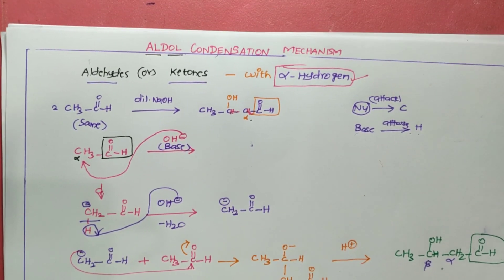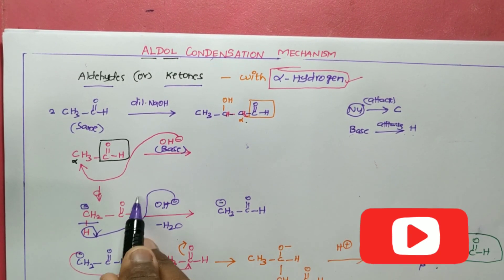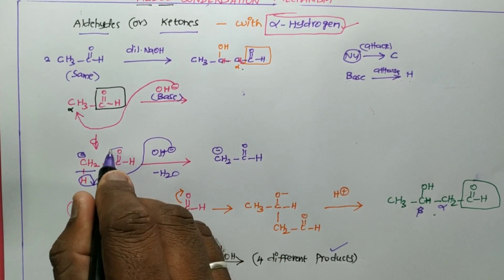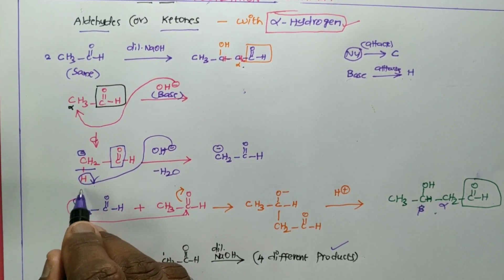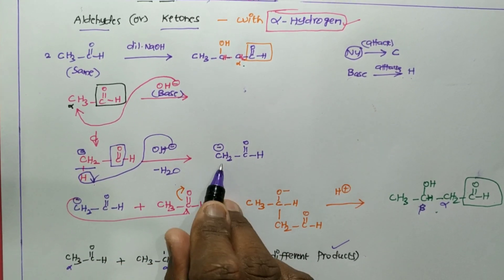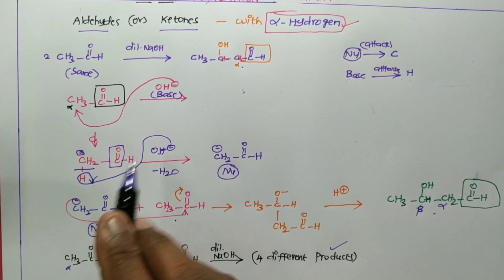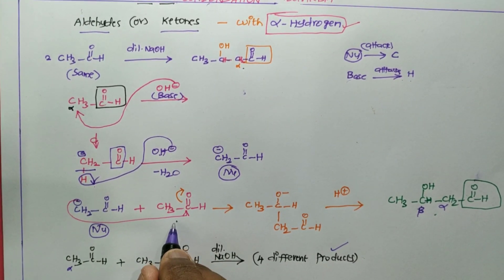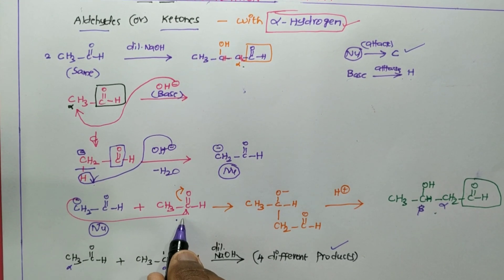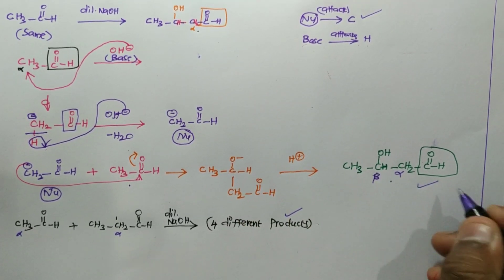To summarize the mechanism: in the first step, the base acts as a base and attacks the alpha hydrogen. The alpha hydrogen is acidic because the adjacent carbonyl is an electron-withdrawing group. The acidic alpha hydrogen reacts with the basic OH⁻ to form water, and simultaneously a nucleophile — the enolate — is formed. In the second step, this nucleophile attacks the carbon of the second aldehyde molecule. After acidification, the final product is beta hydroxy butanal.